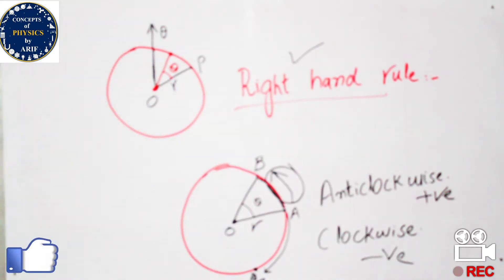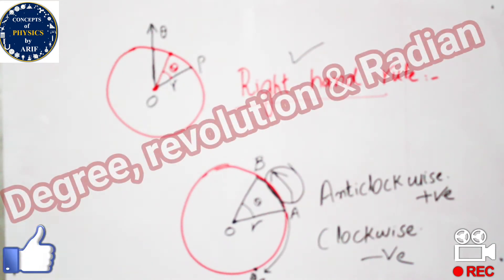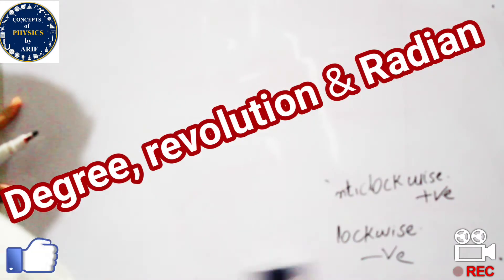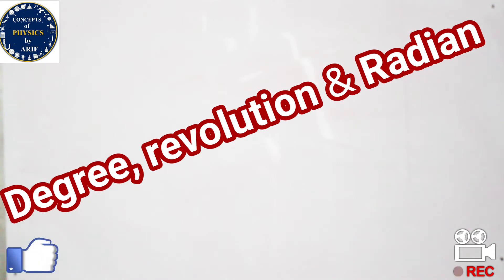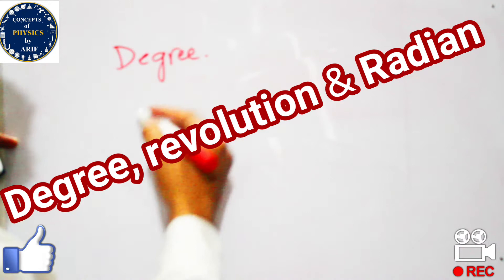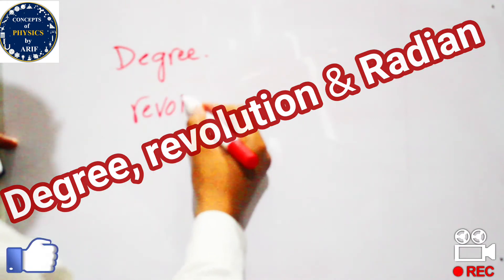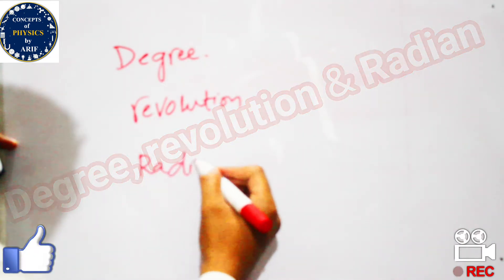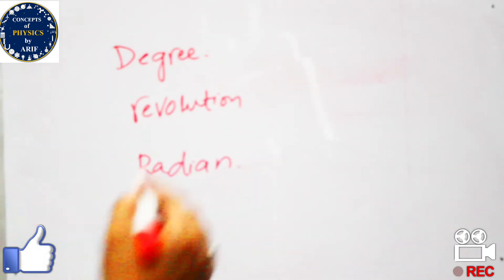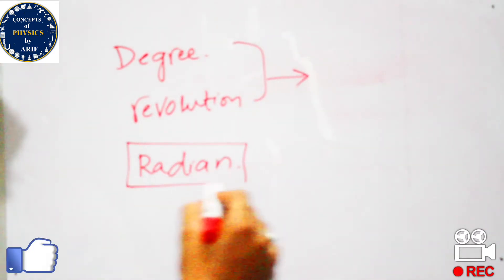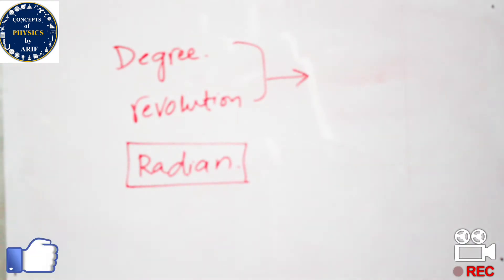To explain more about angular displacement, there are three basic units: degree, revolution, and radian. Degree and revolution are well-known units, but radian is not as well known. However, radian is the SI unit of angular displacement.